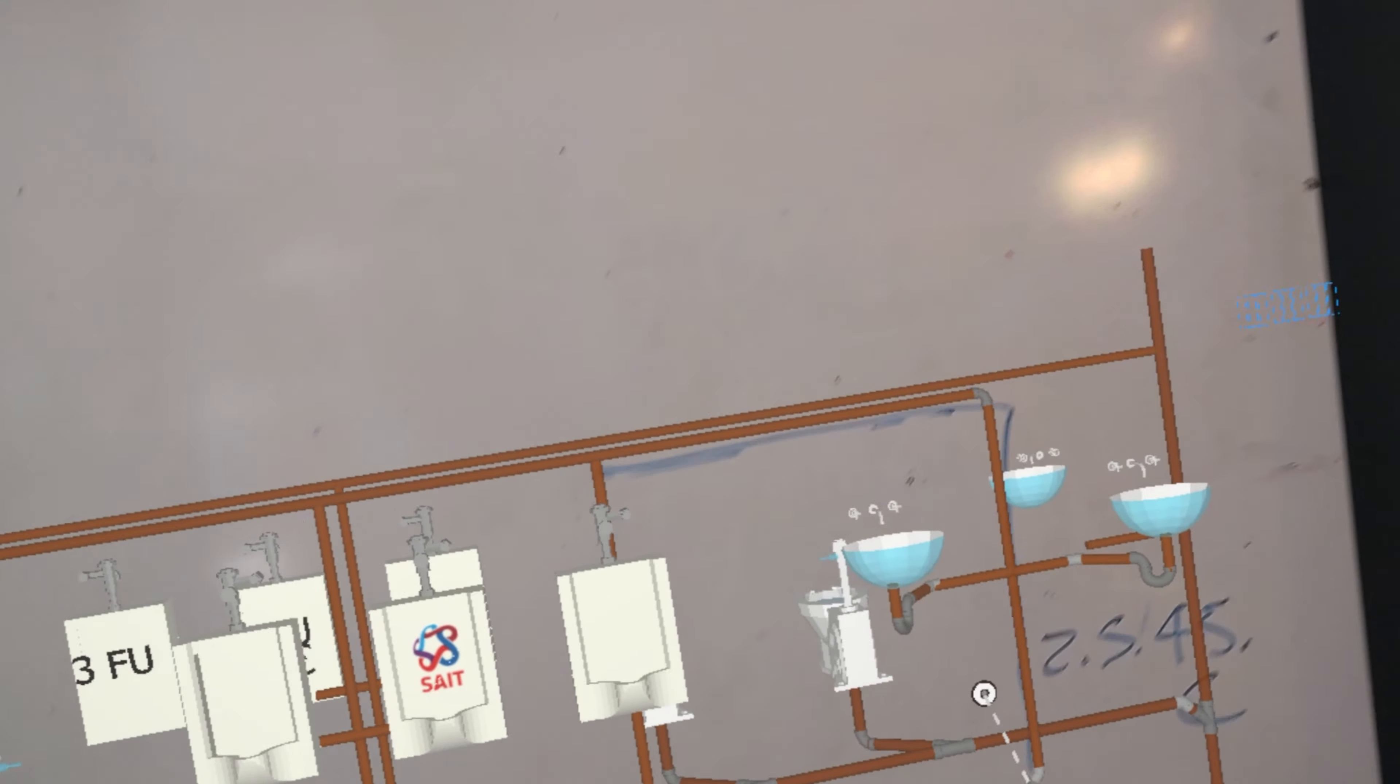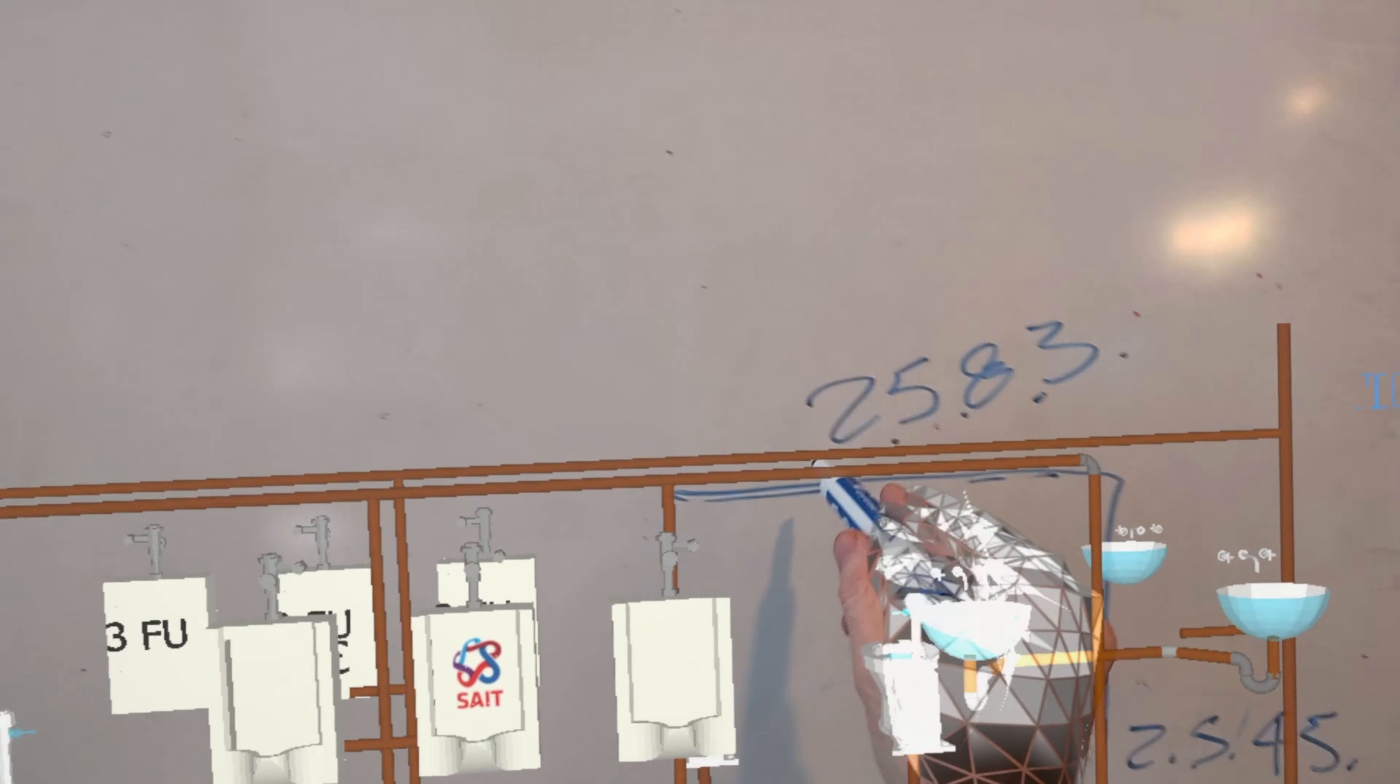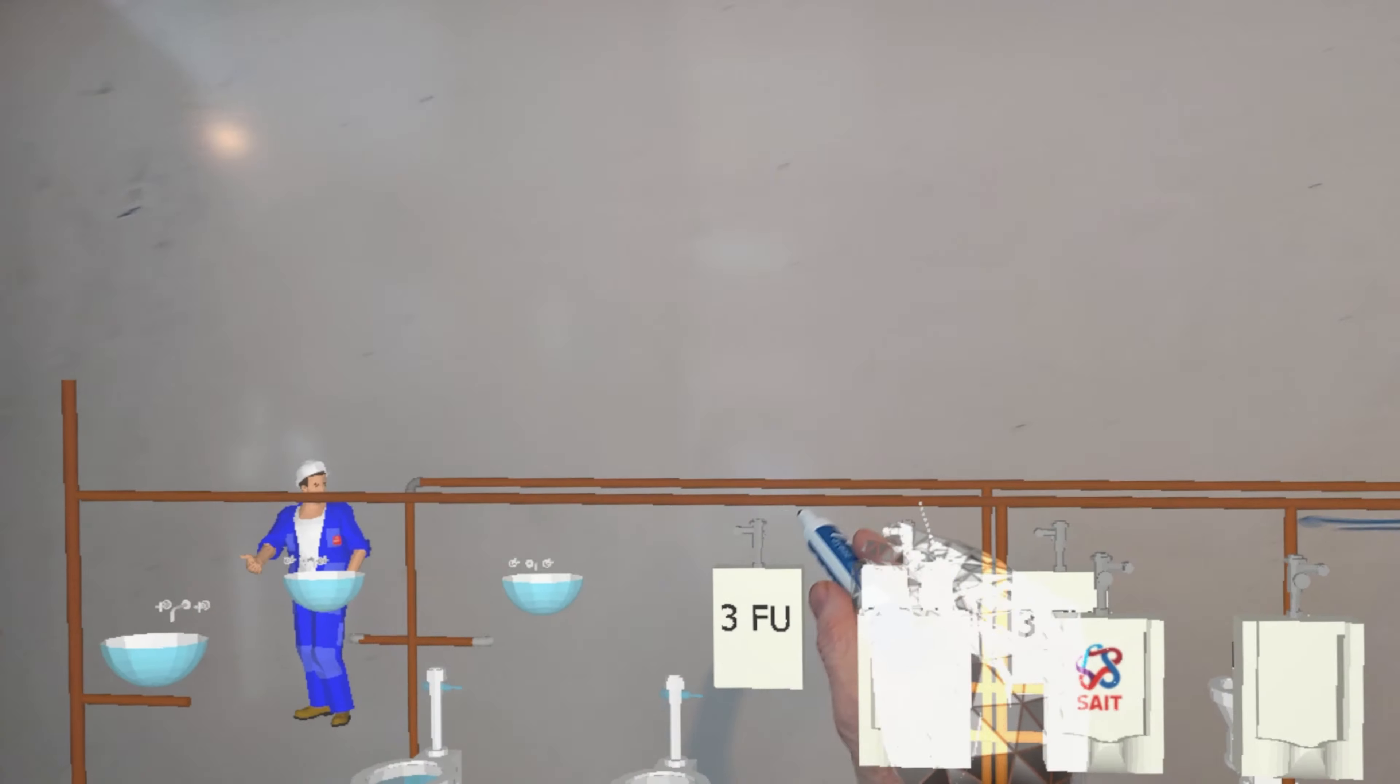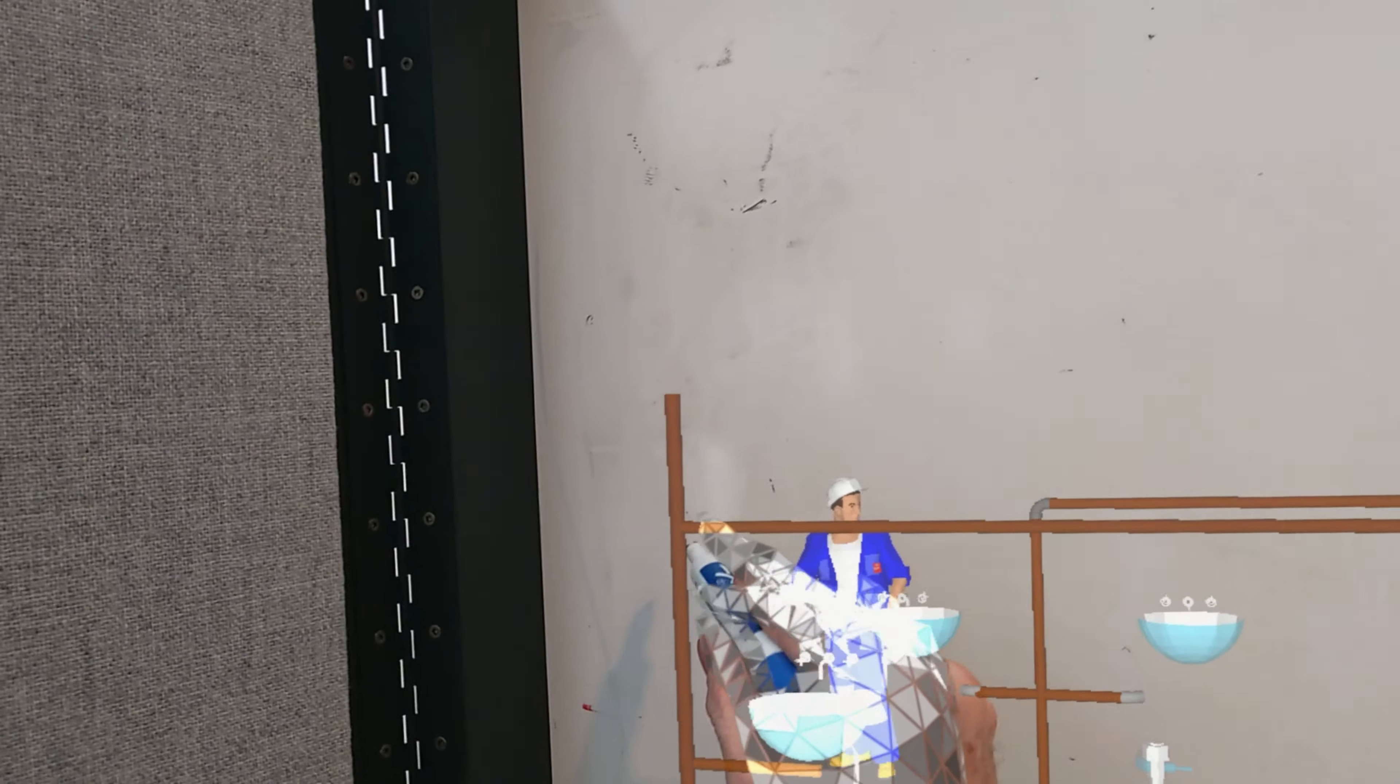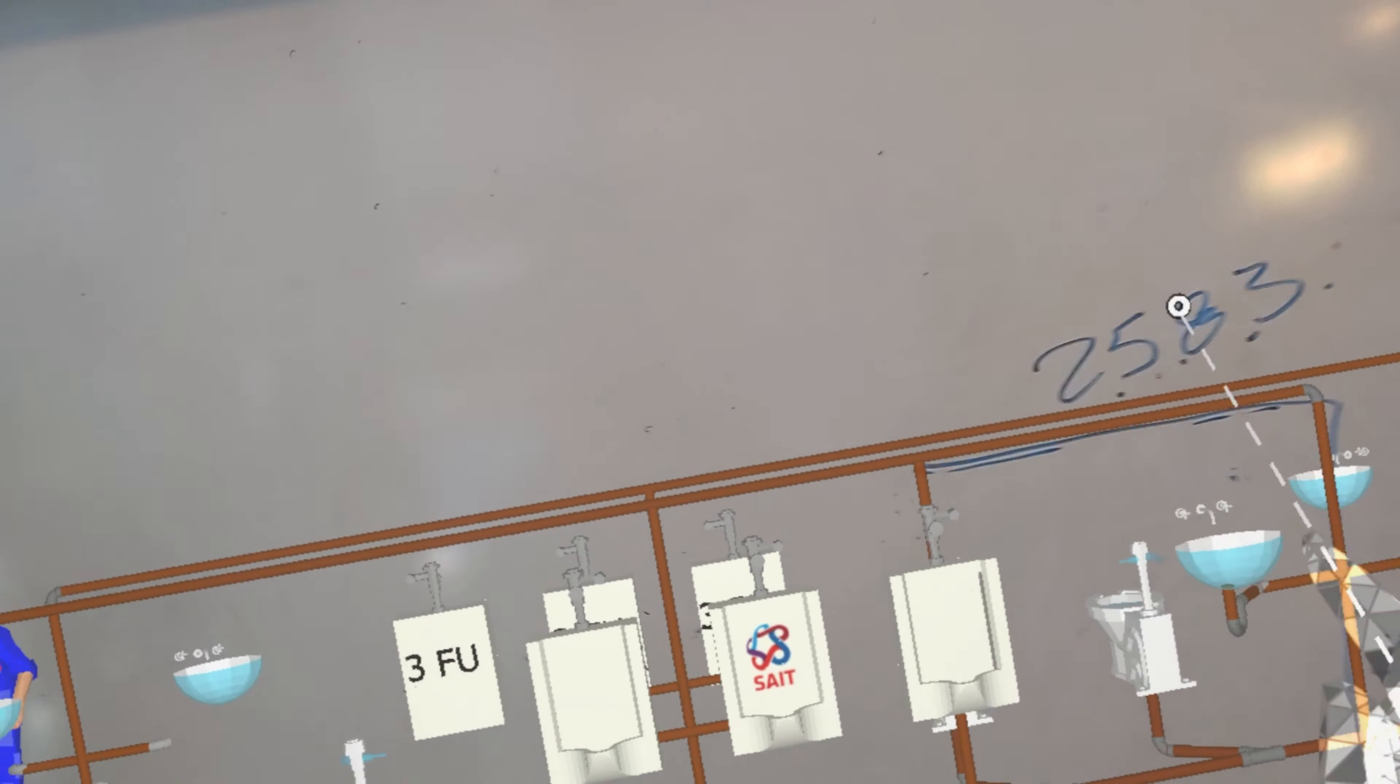And that dry portion of the circuit vent would be sized by 2583. And of course we want our students to measure the developed length. The developed length of a circuit vent is from the horizontal soil or waste pipe connection to the stack vent header or outside air. In this case it would be to outside air. So they would have to measure this in meters to find out the size of this circuit vent.